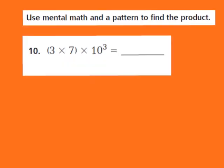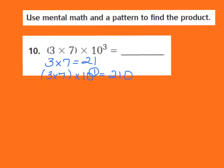Now let's take a look at question number 10. Our job is to use mental math and a pattern to find the product. They give us 3 times 7 times the third power of 10. First, I establish my basic fact: 3 times 7 equals 21. Then I continue with the pattern by multiplying 3 times 7 by the first power of 10. The exponent is 1, which means I add 1 zero to my product of 21, giving me 210.